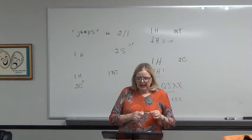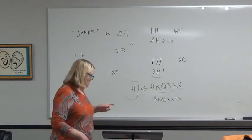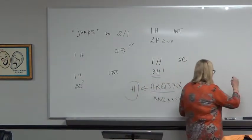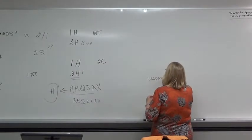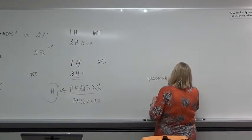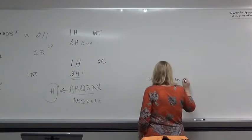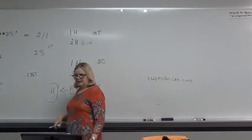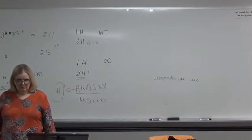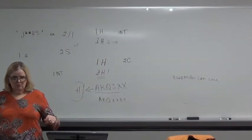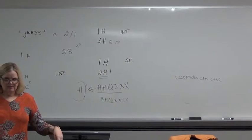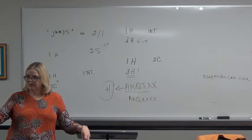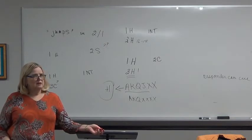So over this three spades, or whatever this is, three hearts now, responder can cuebid if he has anything to cuebid. If he's got the ace of spades, he can bid it. So it goes one heart, two clubs, three hearts, three spades. That's a cuebid showing the ace of spades.